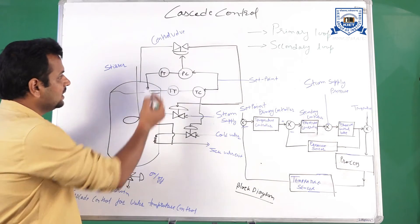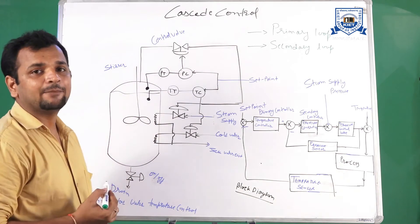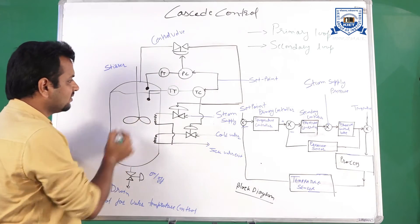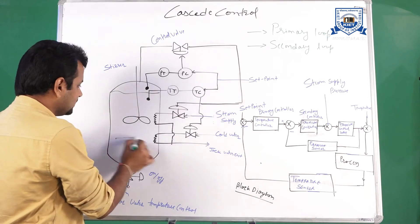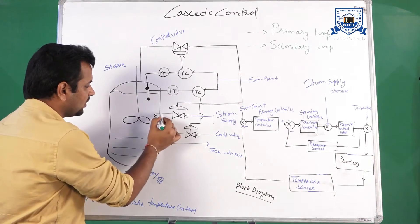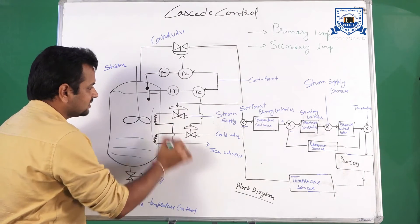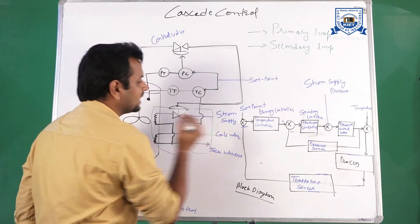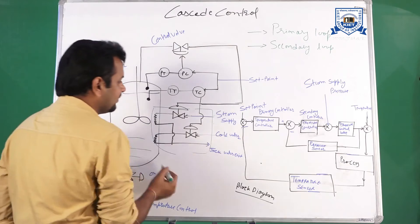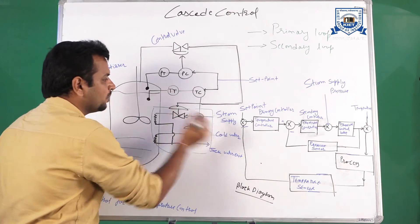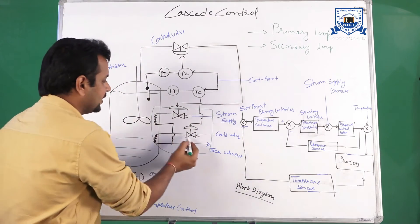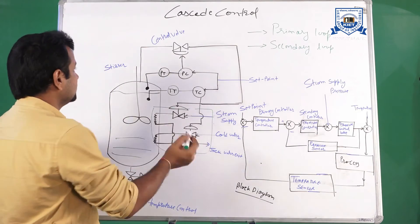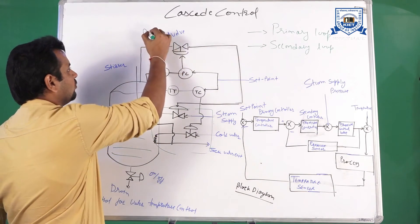In that example, we are controlling both pressure and temperature. As you can see in the diagram, there is a stirrer for mixing the product. This circuitry is for temperature control — there is a supply of cold water and a steam supply. To increase the temperature, I will open the valve of steam supply, and to decrease the temperature, I will open the valve of cold water. A pressure control valve is also there for controlling the pressure.